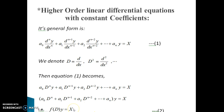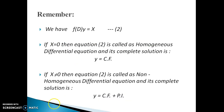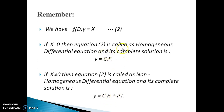Depending on the value of X, we have two different types of higher order linear differential equations. If X is equal to 0, then equation 2 is called a homogeneous differential equation and its complete solution is y equal to the complementary function. If X is not equal to 0, then equation 2 is called a non-homogeneous differential equation and its complete solution is y equal to CF plus PI, where PI means particular integral. We will see the rules to find the particular integral in the next video. Whether the equation is homogeneous or non-homogeneous, we have to find the complementary function CF.